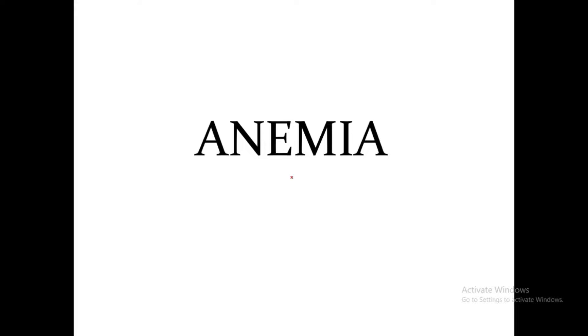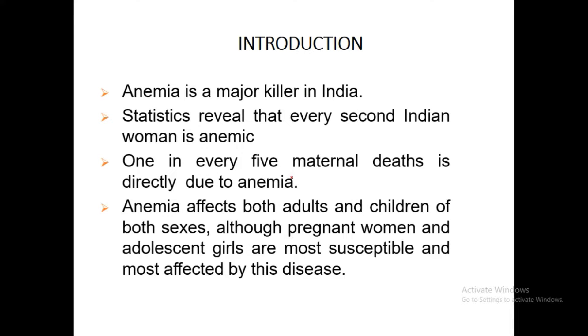Today we begin with Chapter 4: Anemia. Anemia is a major killer in India. Statistics reveal that every second Indian woman is anemic, and one in every five maternal deaths is directly due to anemia. Anemia affects both adults and children of both sexes. All pregnant women and adolescent girls are most susceptible and most affected by this disease.